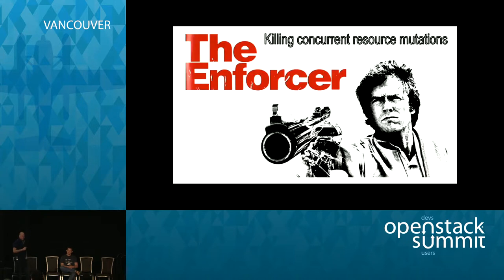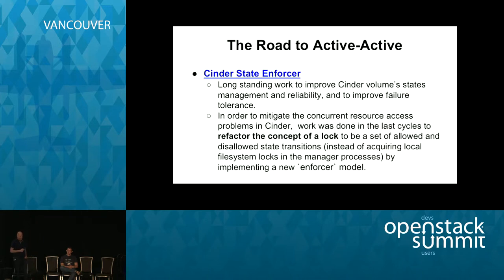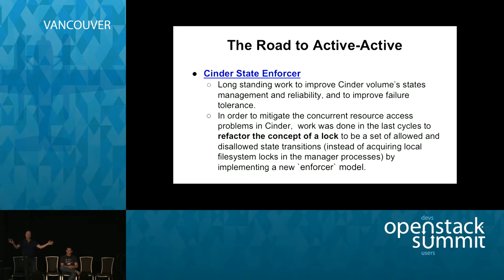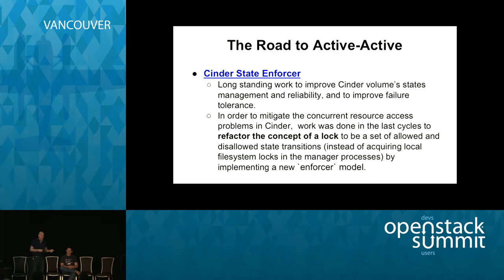Let's talk about concurrent resource mutation and how we're going to address it with new initiatives in Cinder — the road to active-active. There's a new initiative called the Cinder State Enforcer. Long-standing work on improving Cinder volume state management and reliability will allow us to improve failure tolerance and mitigate concurrent resource access problems. Work was done in the last cycle to refactor the concept of locking, so we can have a set of allowed and disallowed transitions using the new Enforcer model.